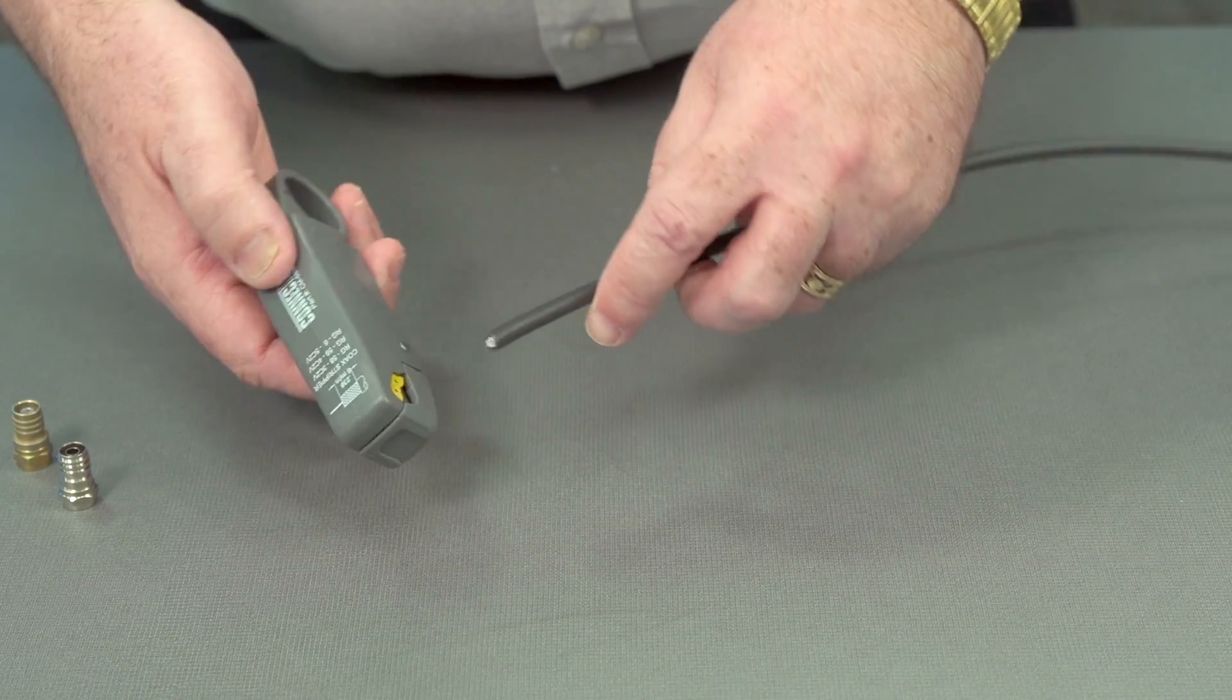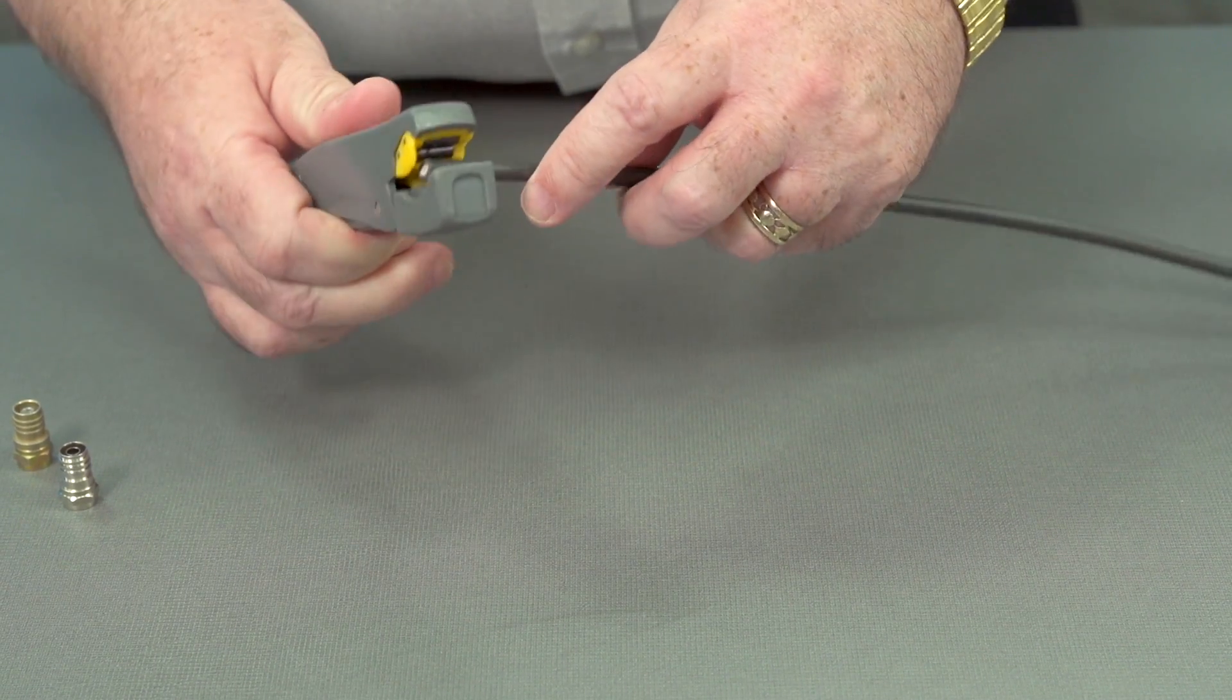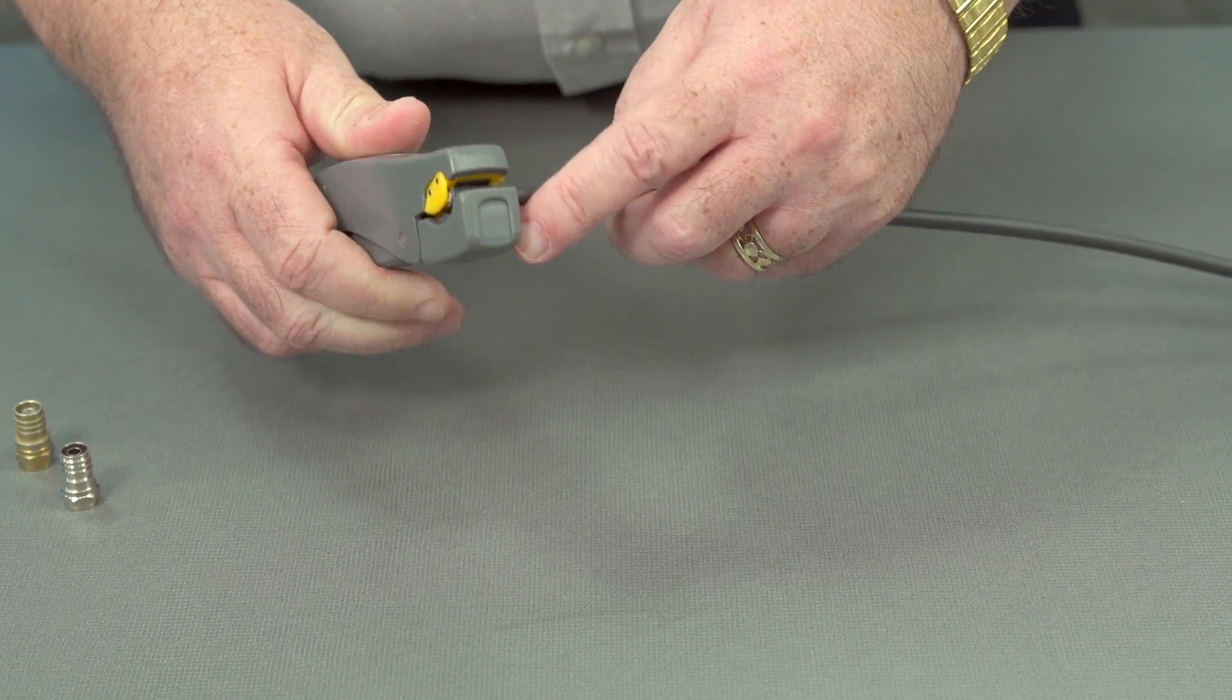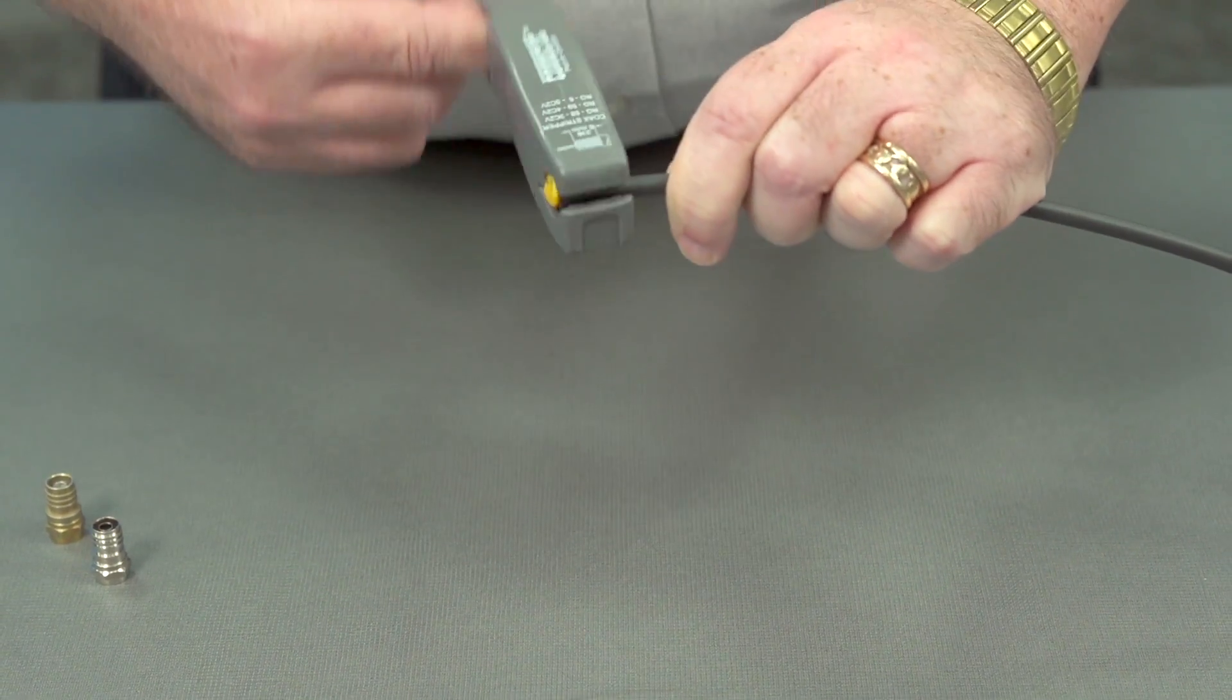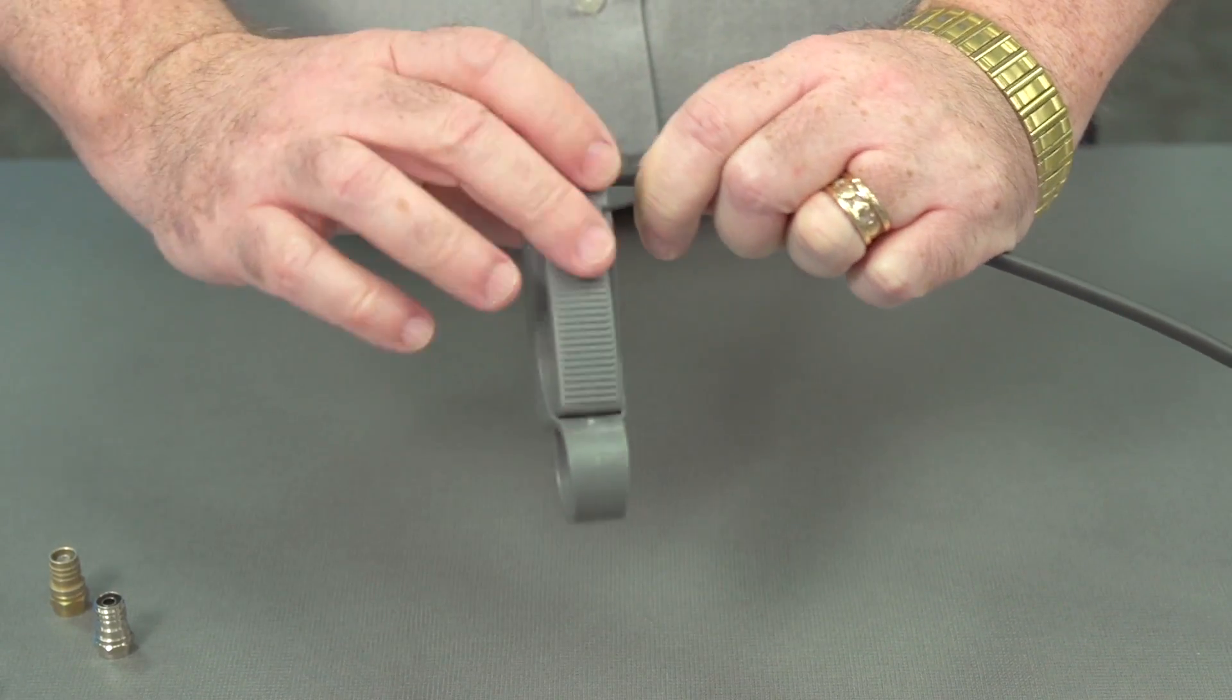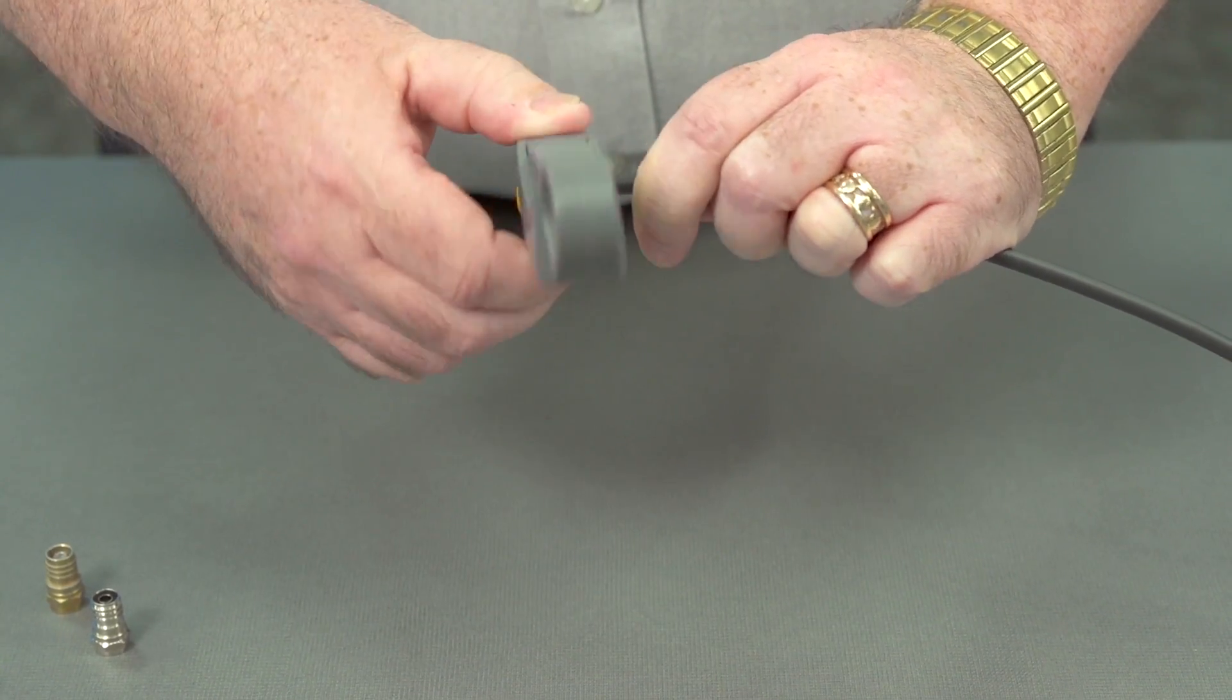We have the right stripper. Insert the cable into the stripper. Give it a few twirls. You can hear it cutting through the shield wire, and I'm just going to make sure that this is a good cut here.